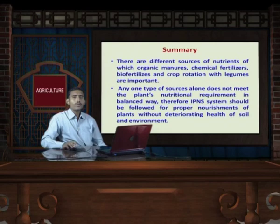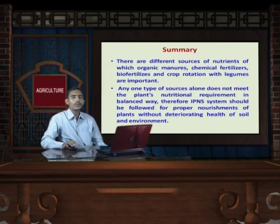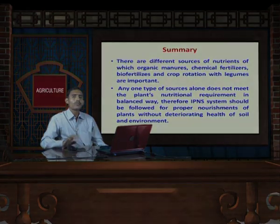Therefore, it leads to sustainability. In this part, we have talked about the integrated plant nutrition supply system, in which there are different sources of plant nutrients — either inorganic, organic, or bio components. Applying through only one source is not profitable because it leads to nutrient imbalance. We have to apply different sources of nutrients in an integrated manner, including a combination of all sources of plant nutrition.